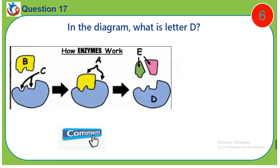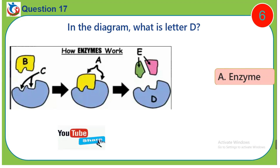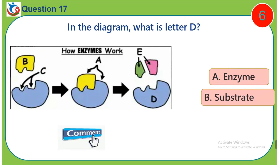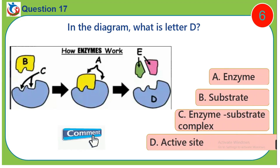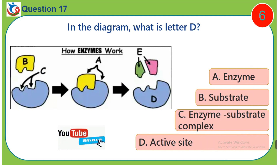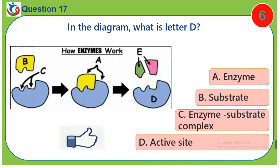Question 17. In the diagram, what is letter D? A. Enzyme. B. Substrate. C. Enzyme substrate complex. D. Active site.